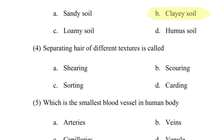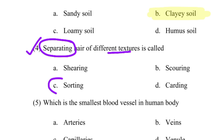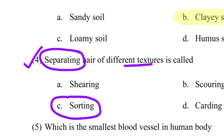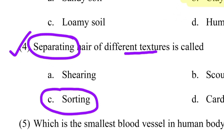Next question: Separating hair of different textures — what is this process called? The options are shearing, scoring, sorting, and carding. The correct answer is sorting. When you separate items by texture, that process is called sorting.